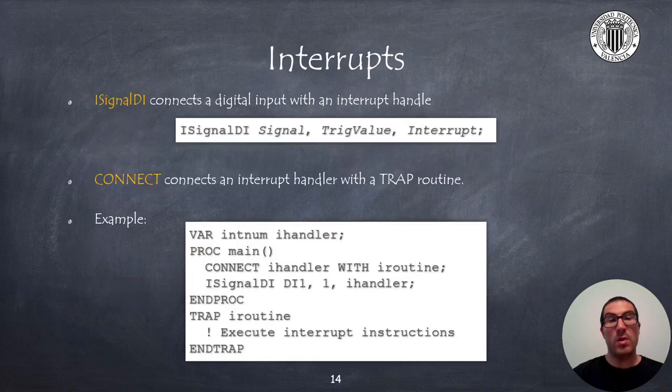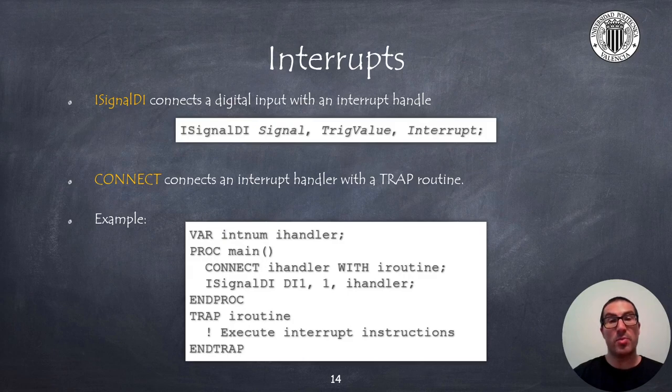Finally, it's worth mentioning that the program flow can make jumps to interrupt subroutines. We can connect a digital input signal to a trap subroutine, as shown in the code example. First, we establish a connection between the interrupt handler and the trap subroutine with the connect instruction. Then, the iSignalDI instruction will enable the interrupt when the digital signal takes the indicated value.